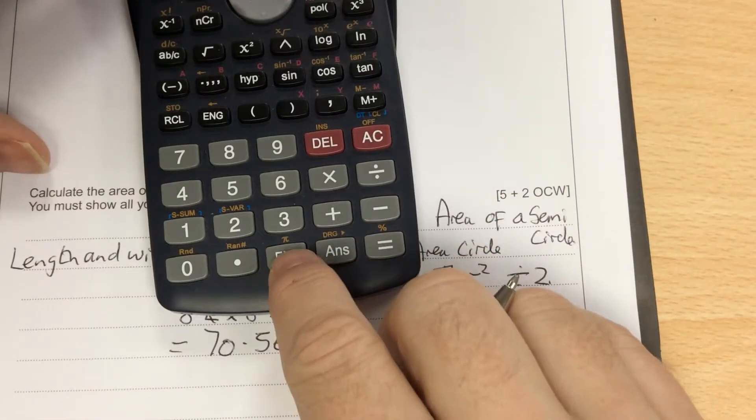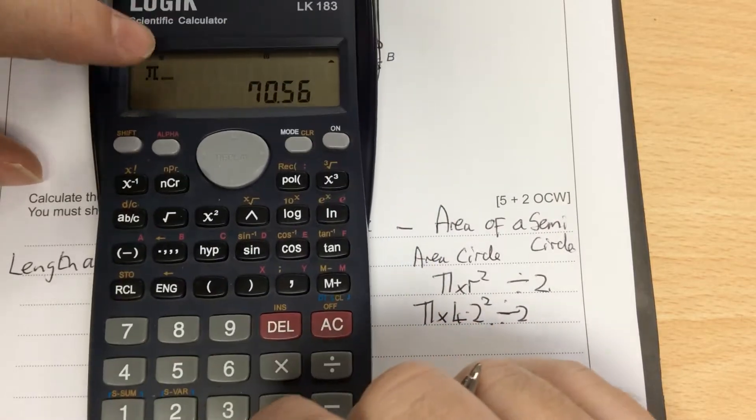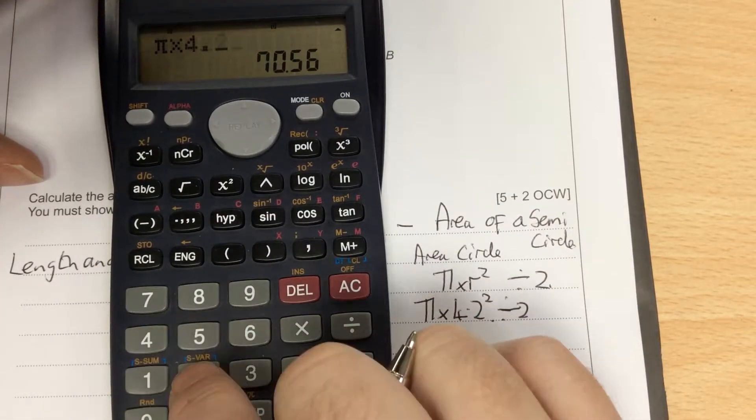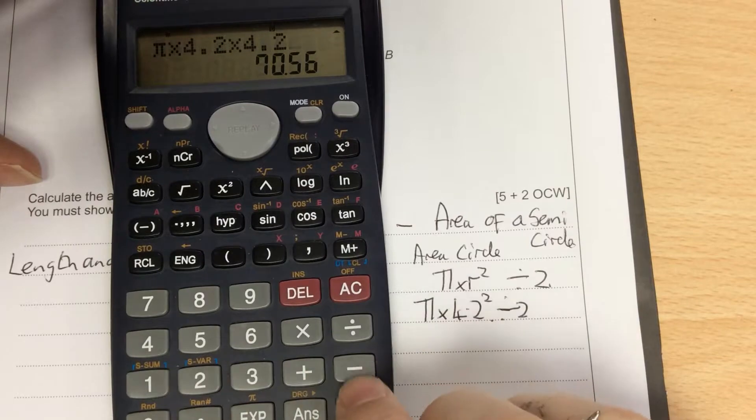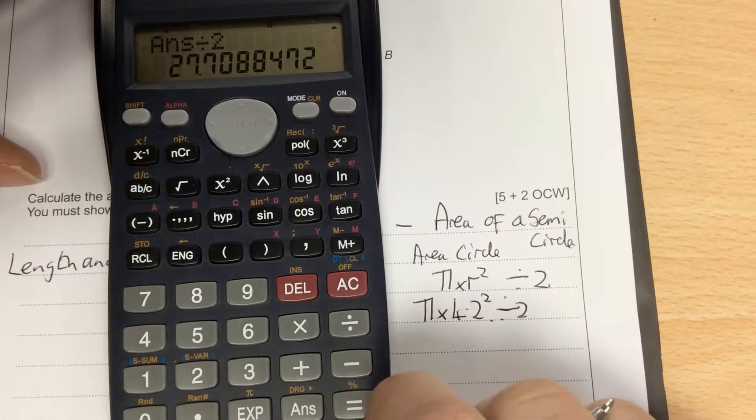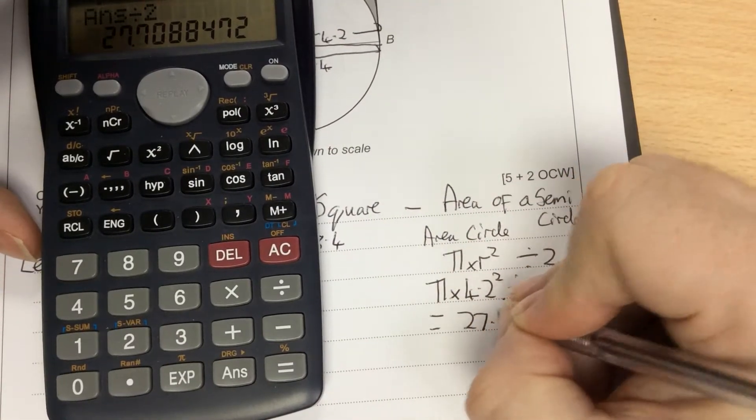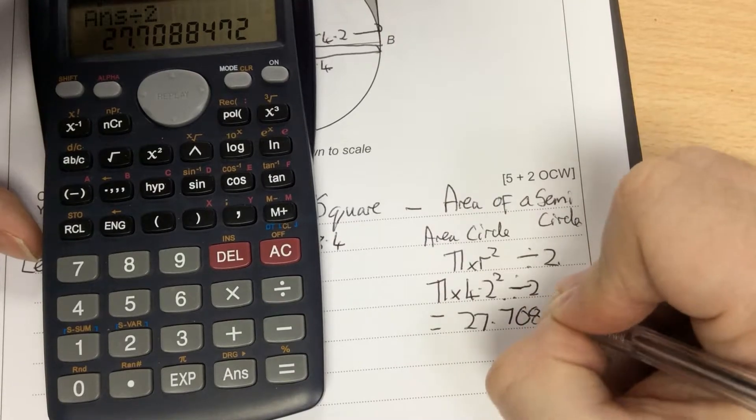So on the calculator, there's the pi button, so I press shift, and the pi comes up, times 4.2 times 4.2, or you can press squared. And because this is a semi-circle, I divide it by 2. So the area of that semi-circle is 27.7088.